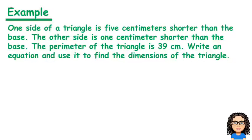One side of a triangle is 5cm shorter than the base. The other side is 1cm shorter than the base. The perimeter of the triangle is 39cm. Write an equation and use it to find the dimensions of the triangle.